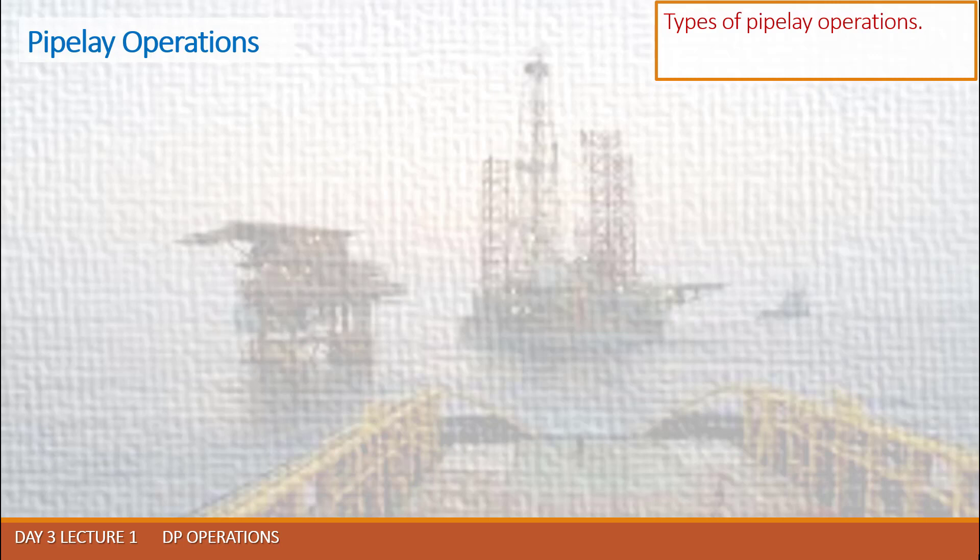Pipe is brought up from hold storage and prepared for fabrication and welding. Often we have 12-meter pipe lengths which are welded into 24-meter double joints prior to arrival at the firing line. In the firing line, a number of stages of welding take place both externally and internally within the pipeline. Each operation is conducted at a station.